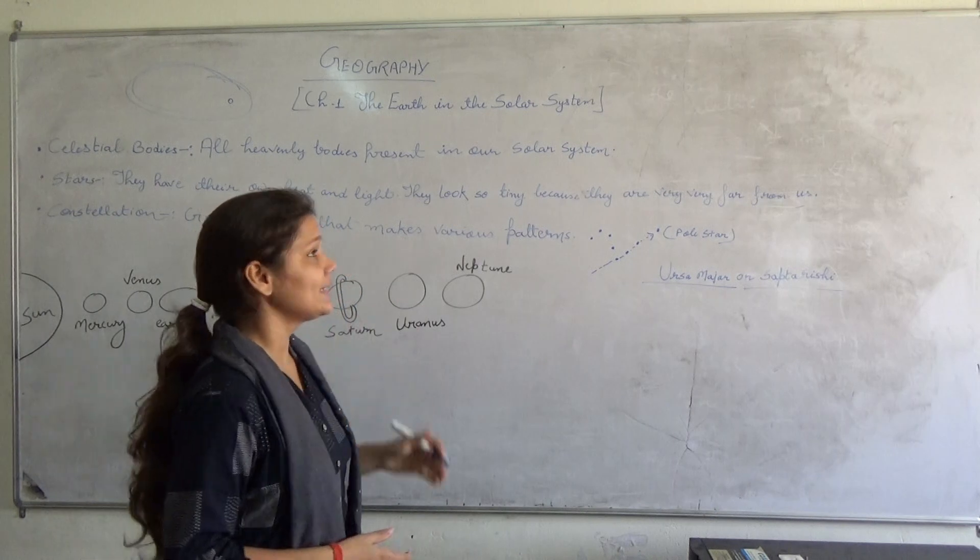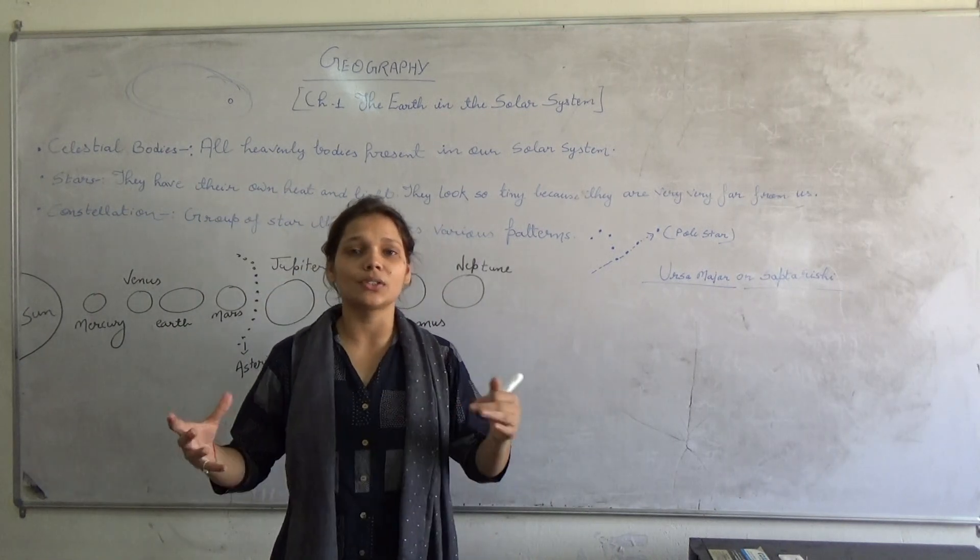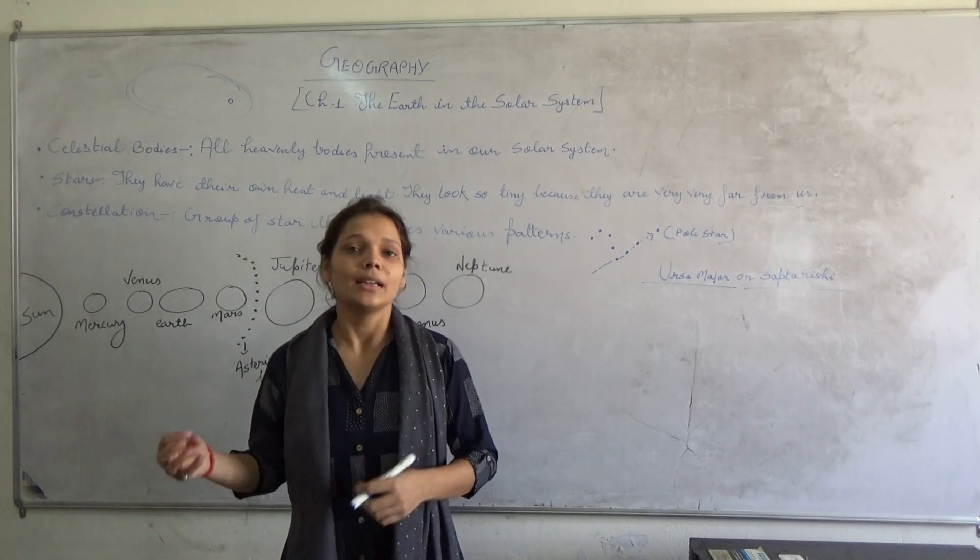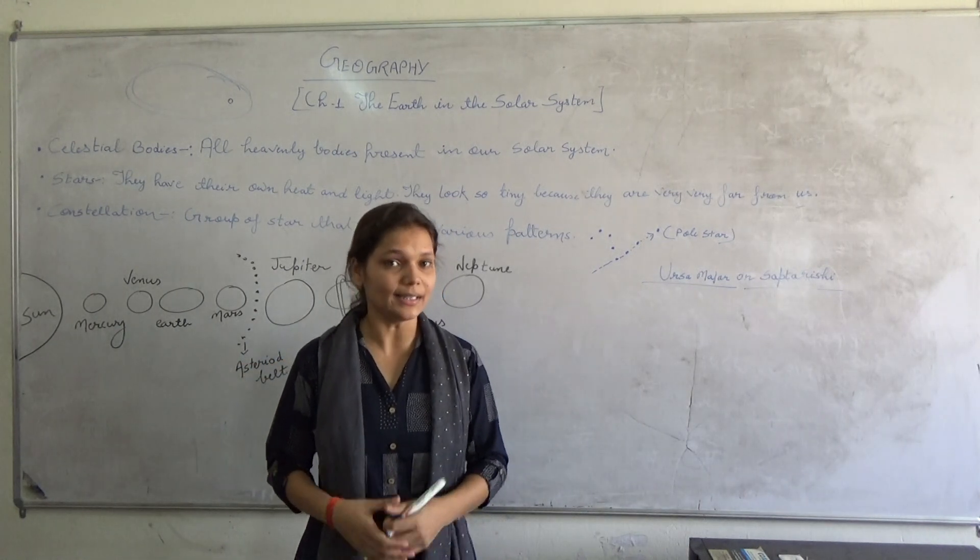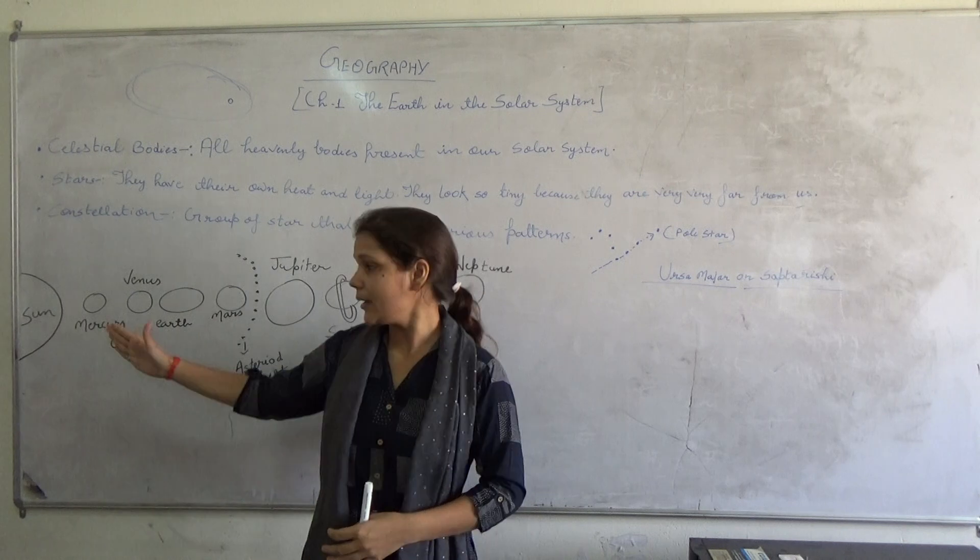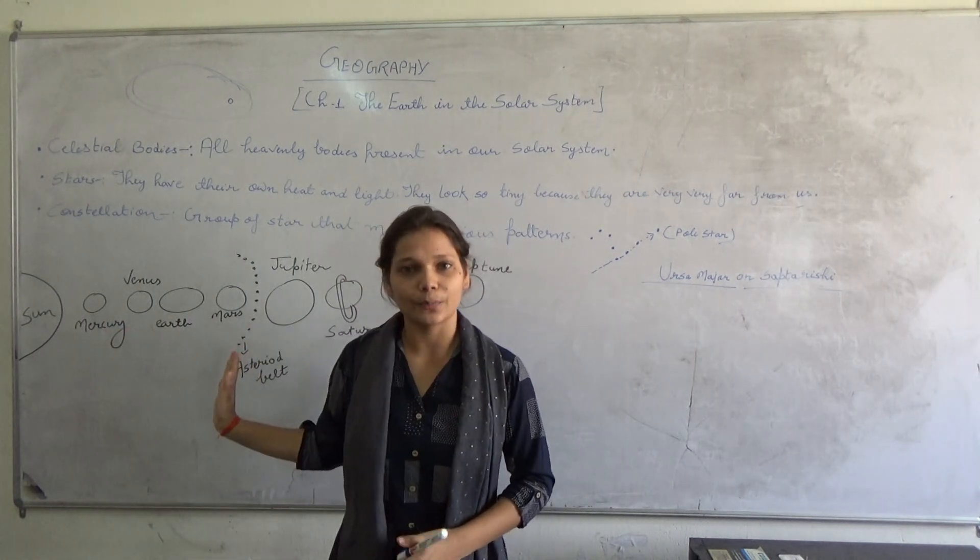I tell you a galaxy. A galaxy is a huge system of millions of stars, planets, satellites. One such galaxy is Milky Way. In this our solar system is present. Let's talk about solar system.